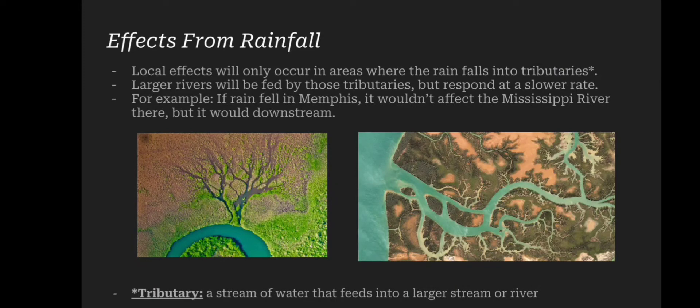For example, if rain fell in Memphis it wouldn't affect the Mississippi River right there at that time, but it would affect a river that is more downstream from Memphis. So tributaries will get those effects right when the rainfall happens, but bigger river systems like the Mississippi River — those will happen at much slower rates.